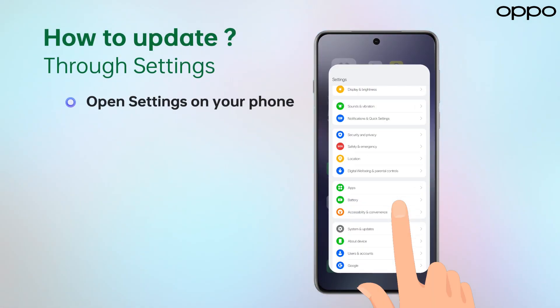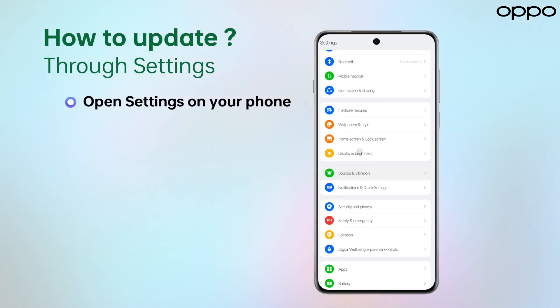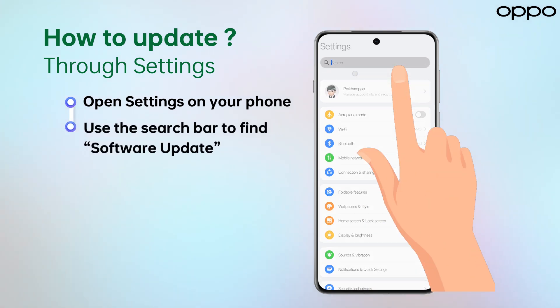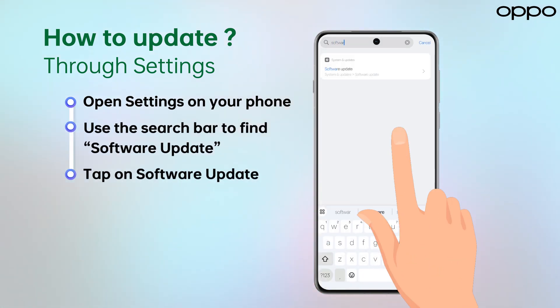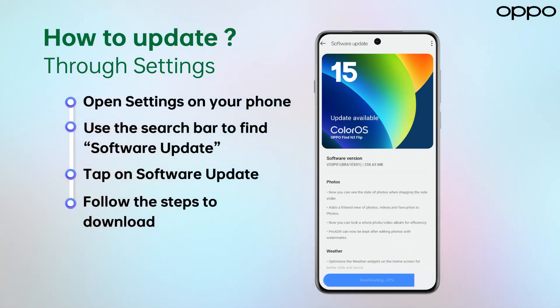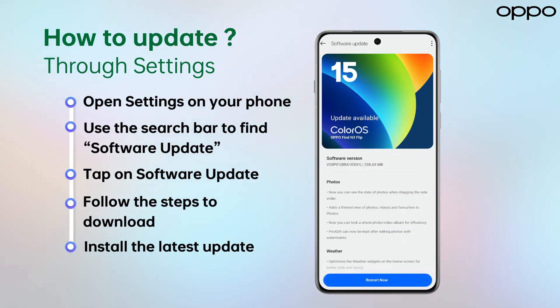Open Settings on your phone. Use the search bar to find Software Update and tap on it. Follow the steps to download and install the latest update.